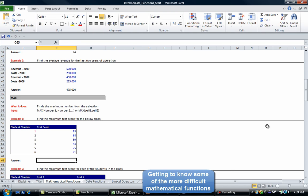The first example says find the maximum test score for the below class. So we've got 6 students in this class. We're going to go equals max and we're going to select that data and close bracket, enter. So the maximum score there is 93.